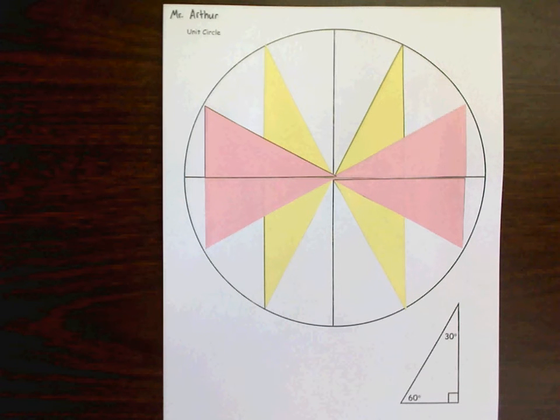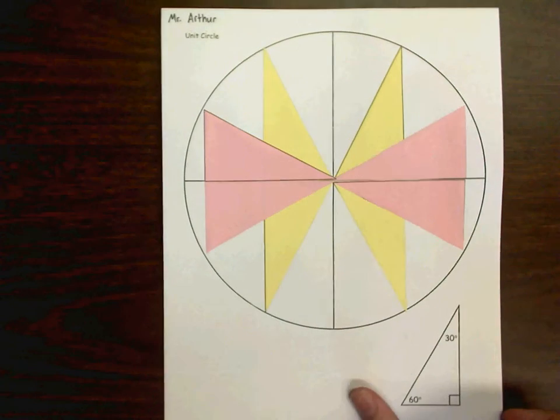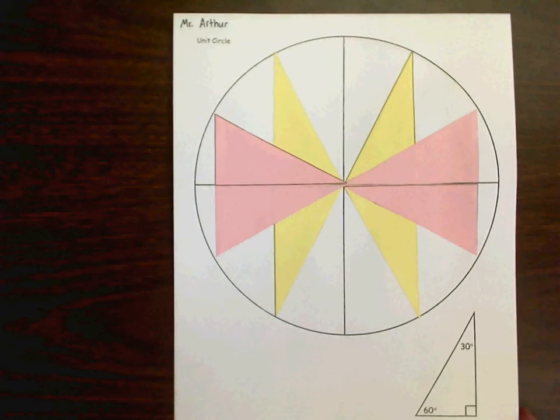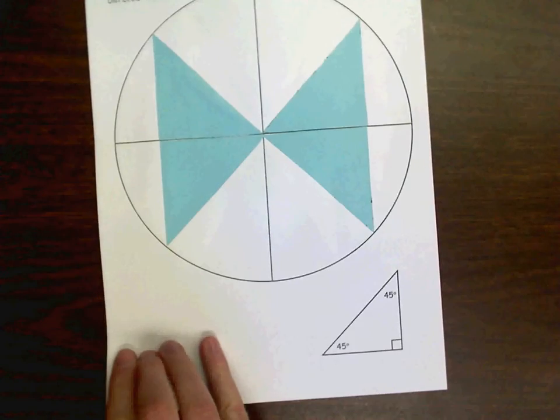Okay. That's pretty much it for the construction. So, again, 30, 60, 90 goes with yellow and pink. 45, 45, 90 goes with blue.